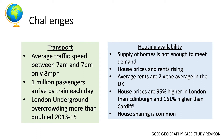One million passengers arrive by train each day and the London Underground is struggling with overcrowding — that overcrowding more than doubled between 2013 and 2015. This is important when thinking about social sustainability: people's comfort, quality of life, and delays caused by congestion on public transport. Additionally, as the population increases, the supply of homes has not been enough to meet demand.